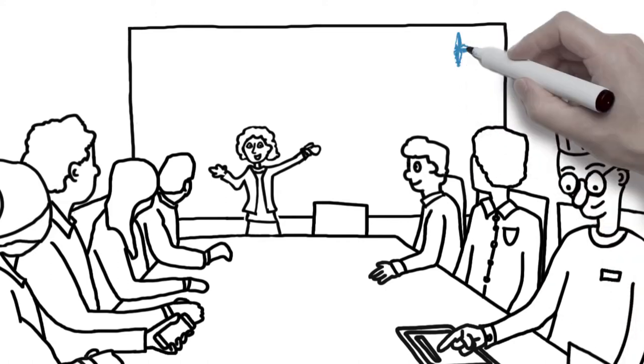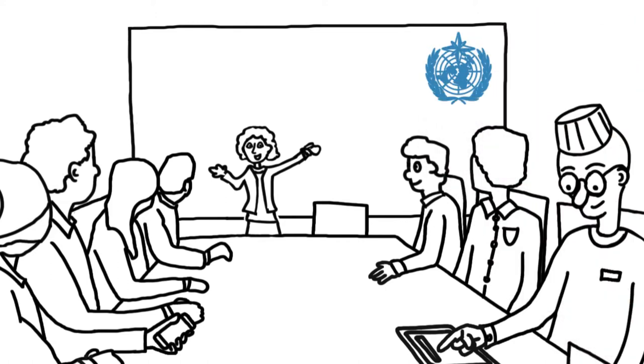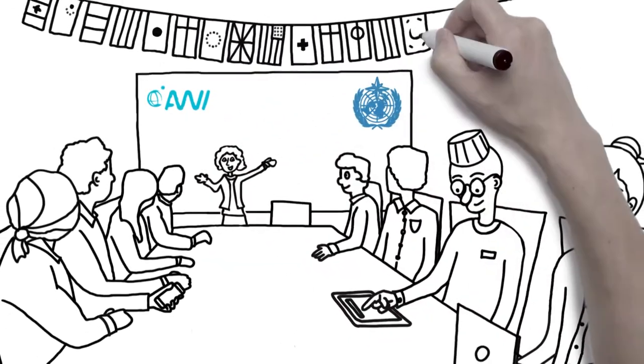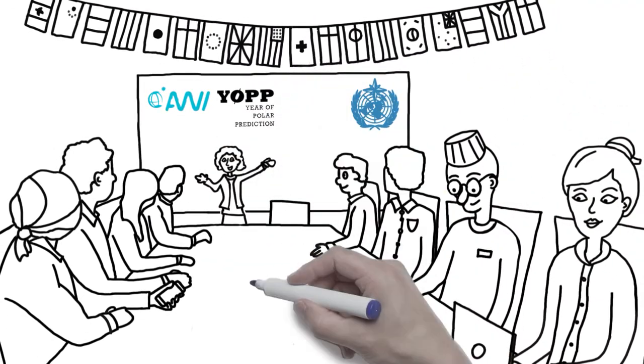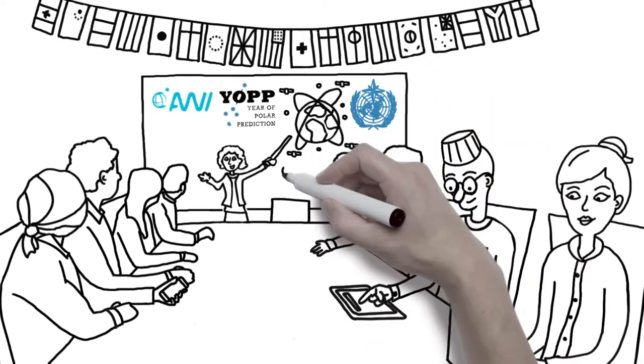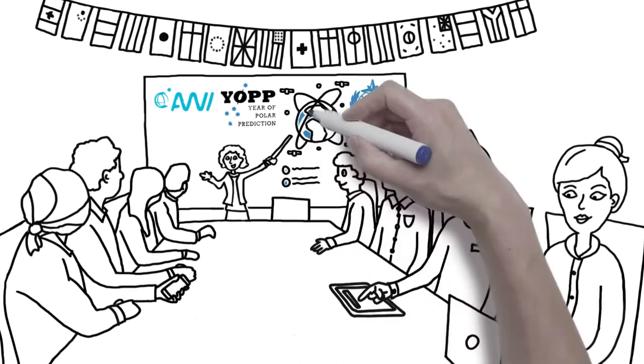To drive this new focus, the World Meteorological Organization, Germany's Alfred Wegener Institute, and partners around the globe have launched the Year of Polar Prediction to improve hourly to seasonal forecasts of polar weather, climate, ice and ocean conditions.